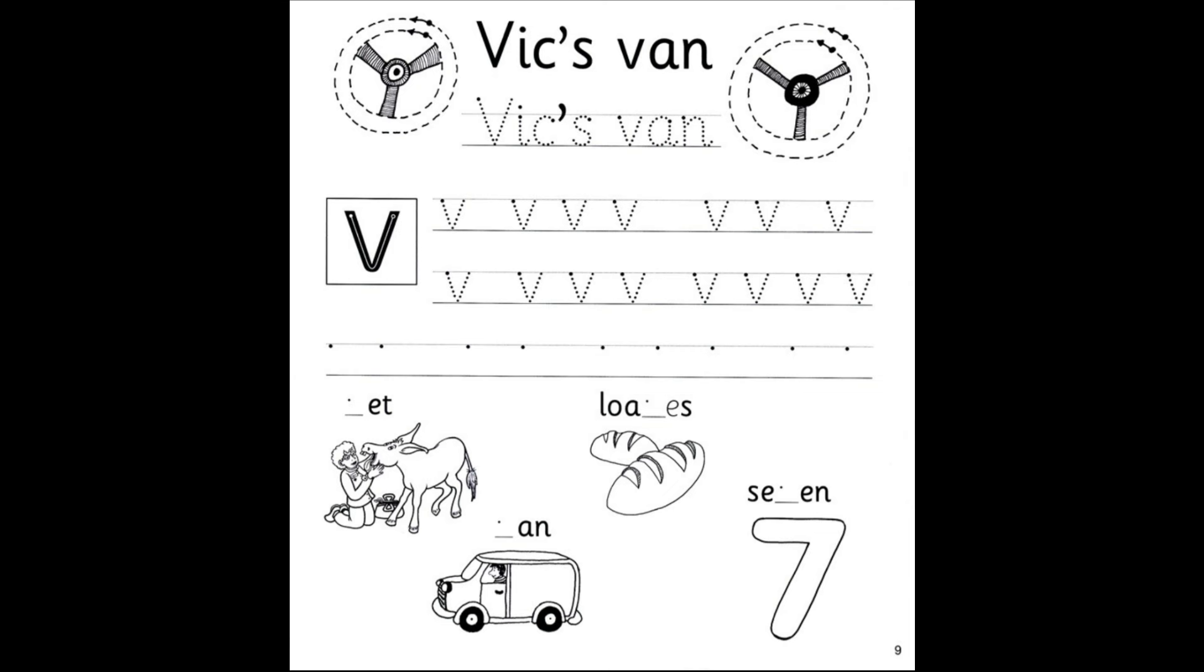Alright, page number nine, the letter V. Let's write Vicks van. So go ahead, write Vicks van. Then we'll do the steering wheels and we'll go down and do the Vs and then the pictures on the bottom. Take your time.